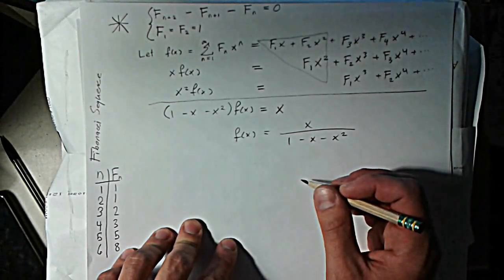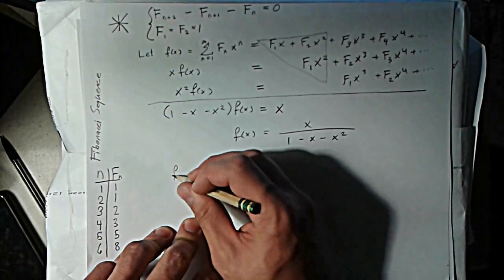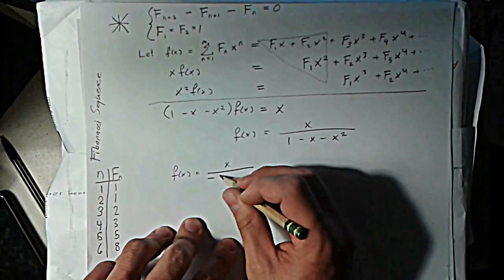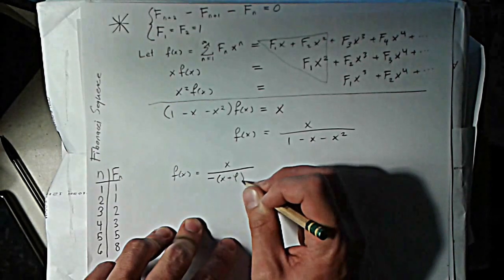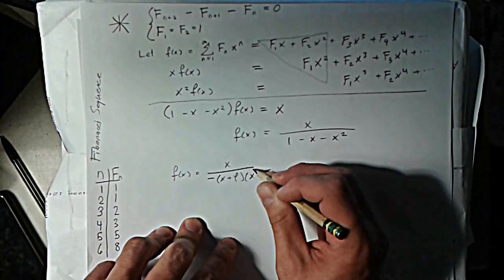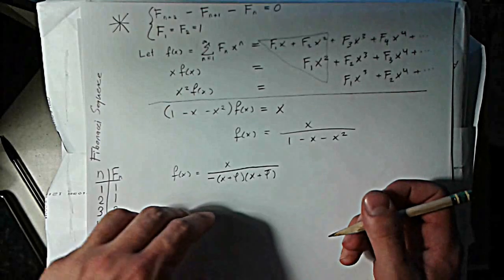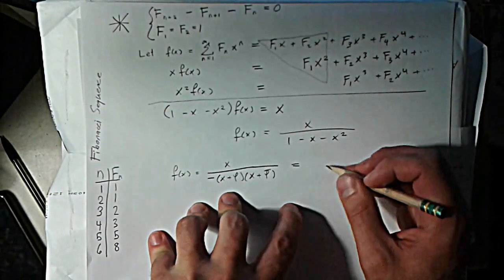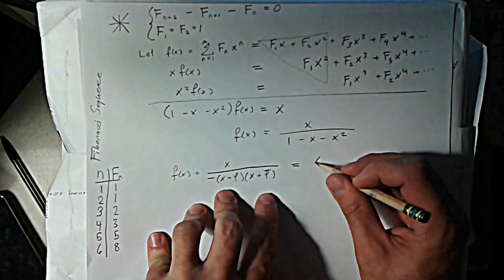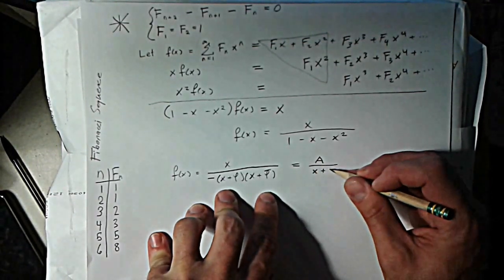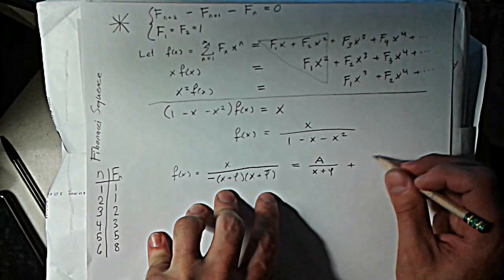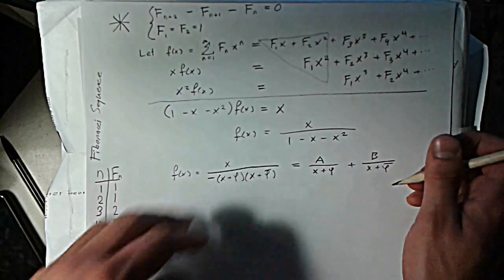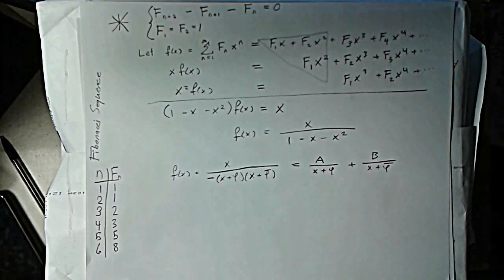So what I'm going to do here is, if you factor the denominator, you'll see that f(x) is equal to x over, this is just going to be negative x plus golden ratio, and x plus golden ratio conjugate. If you're wondering what the golden ratio and golden ratio conjugate are, just check out the last video. And so the idea with this is that I should be able to rewrite this as A over x plus golden ratio, B over x plus golden ratio conjugate, and then I can find out what these B and A are.